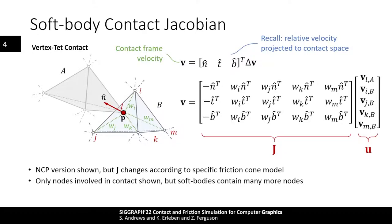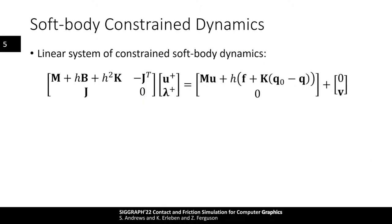Also note that only the nodes involved in the contact are shown in this example, but typically soft body systems have many more degrees of freedom than their rigid body counterparts. The global Jacobian matrix can therefore be quite large and sparse, and care must be taken to assemble the Jacobian to correctly index the non-zero blocks.